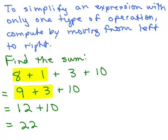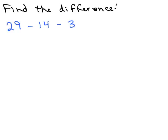So let's do a problem with subtraction now. Again, we have an expression and there's only subtraction. We said we're going to go from left to right. So we first want to start with 29 minus 14, and that'll be 15, right? And I still have minus 3. And so 15 minus 3 is 12.